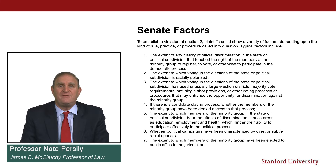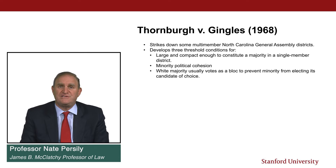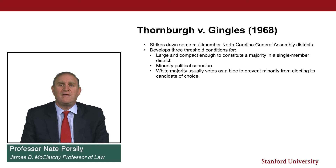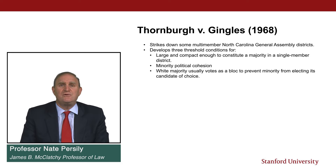Given the many Senate factors and the interpretive demands of Section 2, the Supreme Court in Thornburg versus Jingles in 1986 clarified the ingredients for a Section 2 vote dilution case. The court struck down several multi-member districts in North Carolina's redistricting plan. Jingles boils down the Senate factors to three threshold conditions — the Jingles prongs — that a Section 2 plaintiff must meet to have a legitimate claim under the Voting Rights Act.